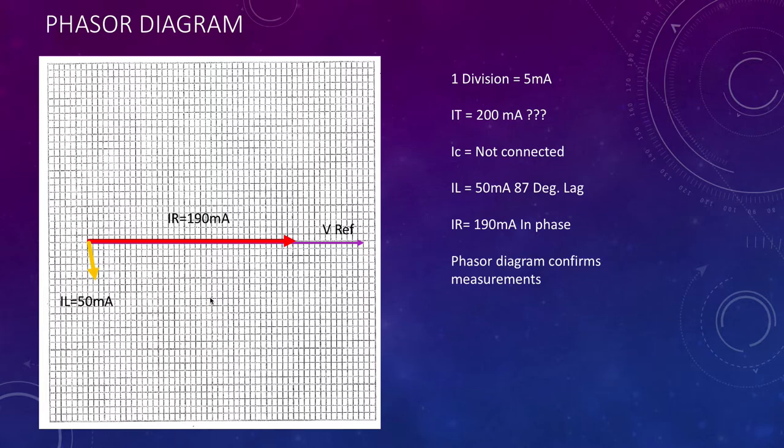So here's a phasor diagram representing what's going on. Again voltage is our reference because it's the one constant in the circuit which we said was about 26.8 volts. That's our current in the resistor at 190 and our current in the inductor at 50. On the next diagram we're simply going to top and tail those values and work out what the current is.